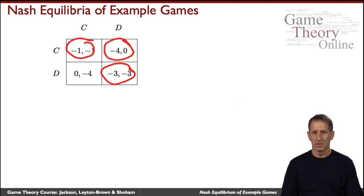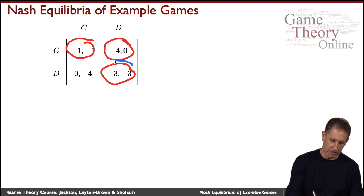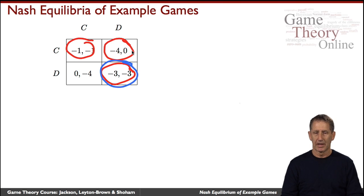Now, this game has a dominant strategy to defect. No matter what the other agent does, you're better off not cooperating. And so, the only dominant strategy outcome is this one of both defecting. And indeed, that is the only Nash Equilibrium in this game.